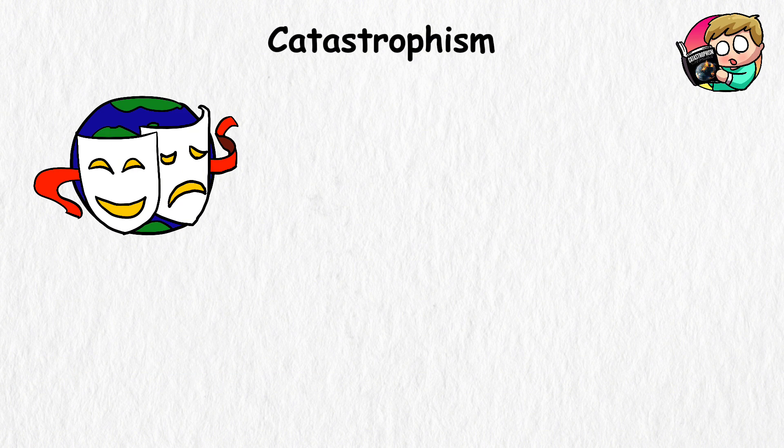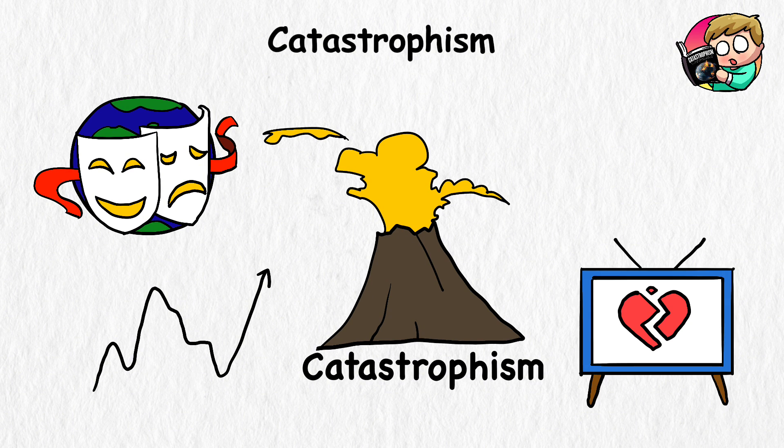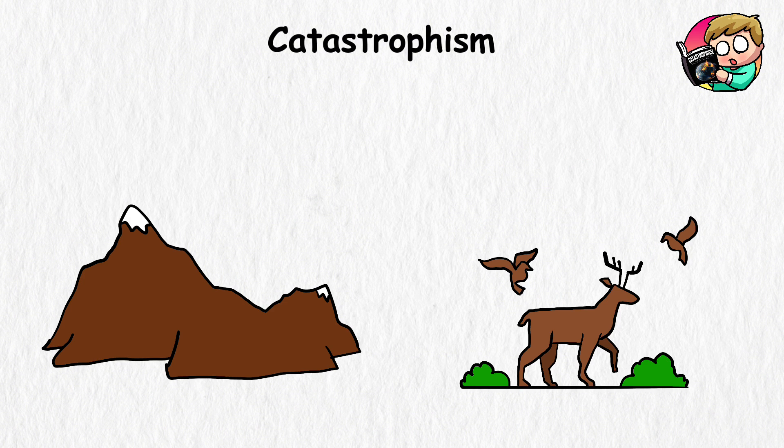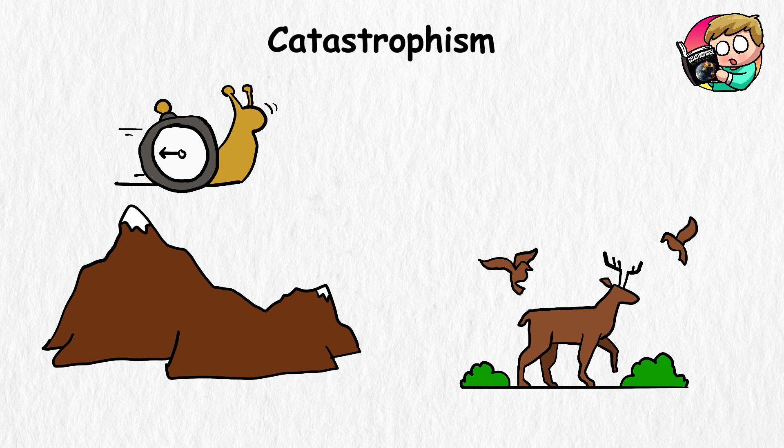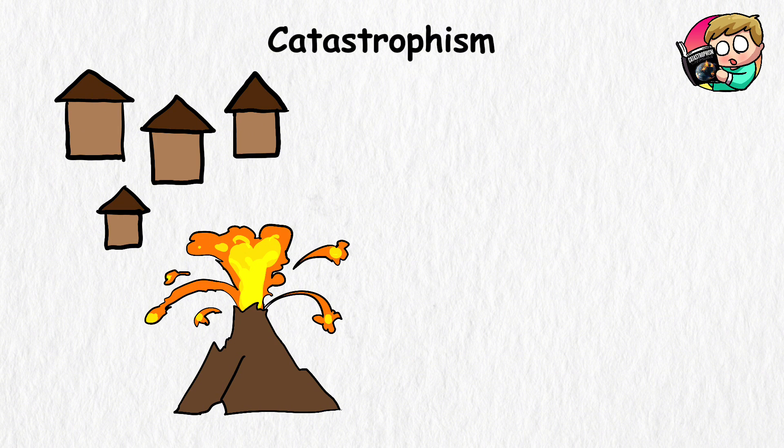Catastrophism. Imagine the Earth as a giant, ever-changing drama. Catastrophism is like the dramatic plot twists in this global soap opera. This theory suggests that the major changes we see in Earth's geology and life forms weren't just the result of slow, gradual processes, but rather came from sudden, cataclysmic events. It's like a movie suddenly shifts from a peaceful village to a huge volcano eruption.